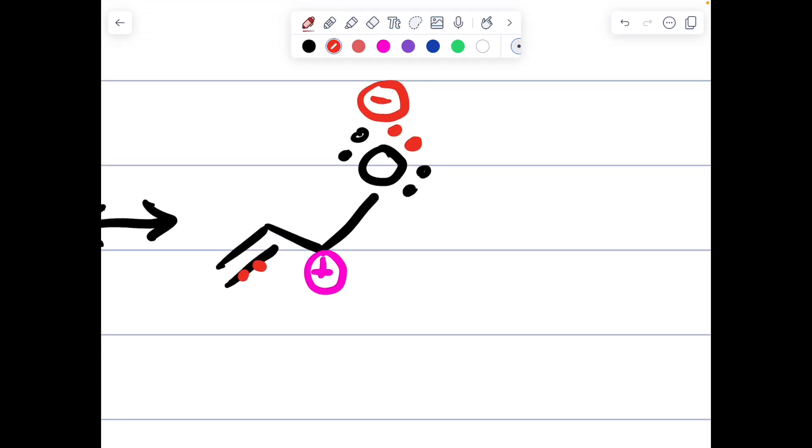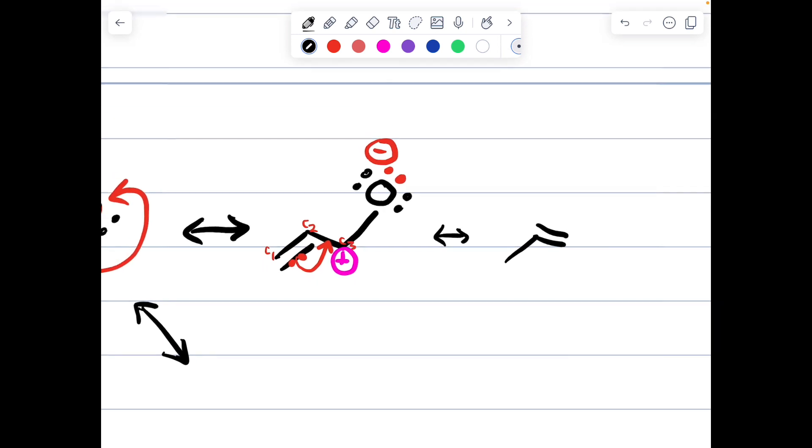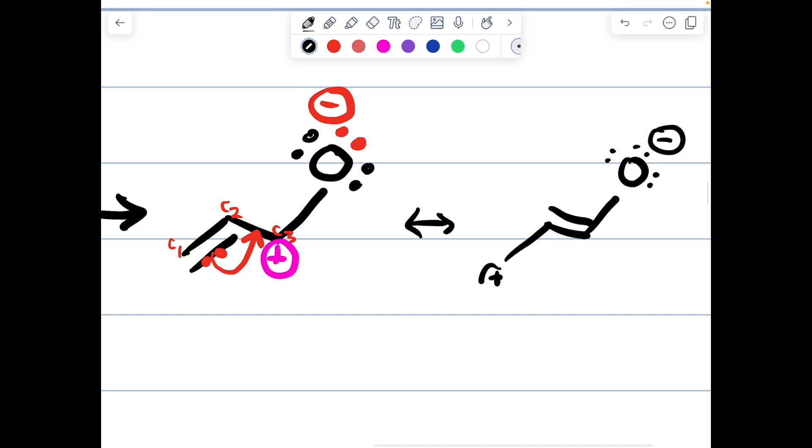So then what happens here? Well, these two electrons, carbon two, C is carbon number three. And carbon number three is like, help, help, help. I'm positively charged. I don't want to be positive. I want to be neutral. So carbon number two says, oh, well, I got a pi bond with carbon number one. We can give you an electron. So we can go two in, in between carbon two and carbon three. So then what happens is carbon number one becomes positive.